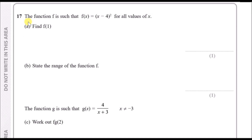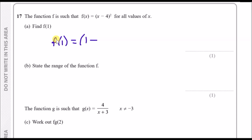Question 17. The function f is such that f(x) equals (x minus 4) all squared. They want us to find f(1), which means replacing the x value with 1. So f(1) is just (1 minus 4) squared. Put this in the calculator and you get a straight answer of 9.